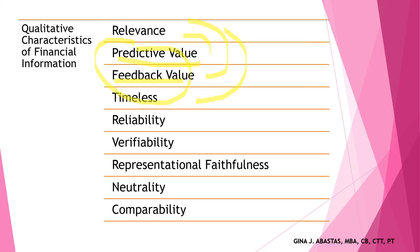Next is feedback value. Quality information has feedback value when it can confirm or correct previous expectations. Users can examine financial information and confirm or adjust predictions made on previous performance trends, and based on that feedback, users can make future decisions. Timeliness is one of the most important factors in relevant information — out-of-date information is not useful when investors or creditors are making current and future decisions. Financial reporting must be timely and current to be useful.